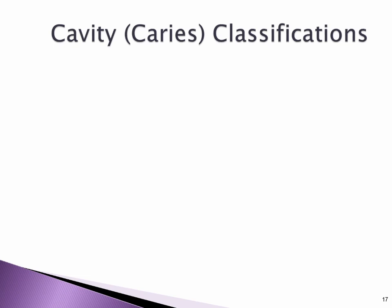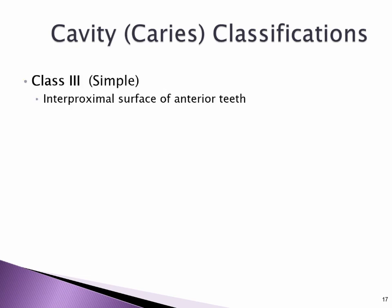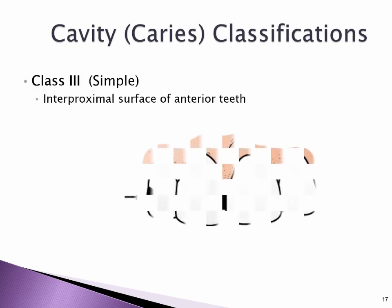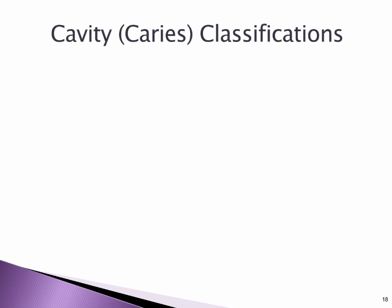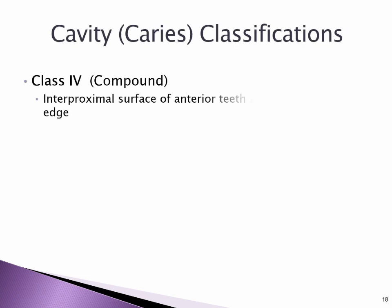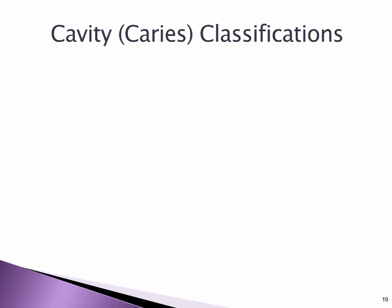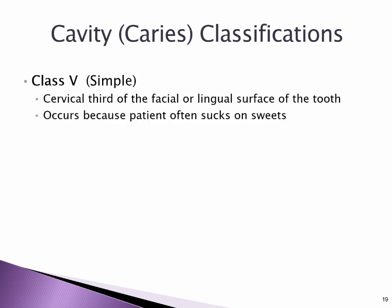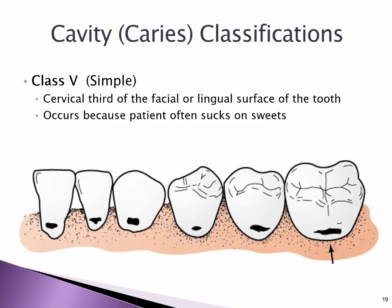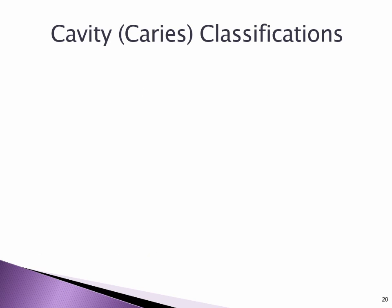Class III (Simple): interproximal surface of anterior teeth. Class IV (Compound): interproximal surface of anterior teeth including the incisal edge. Class V (Simple): cervical third of the facial or lingual surface of the tooth; occurs because the patient often sucks on sweets.